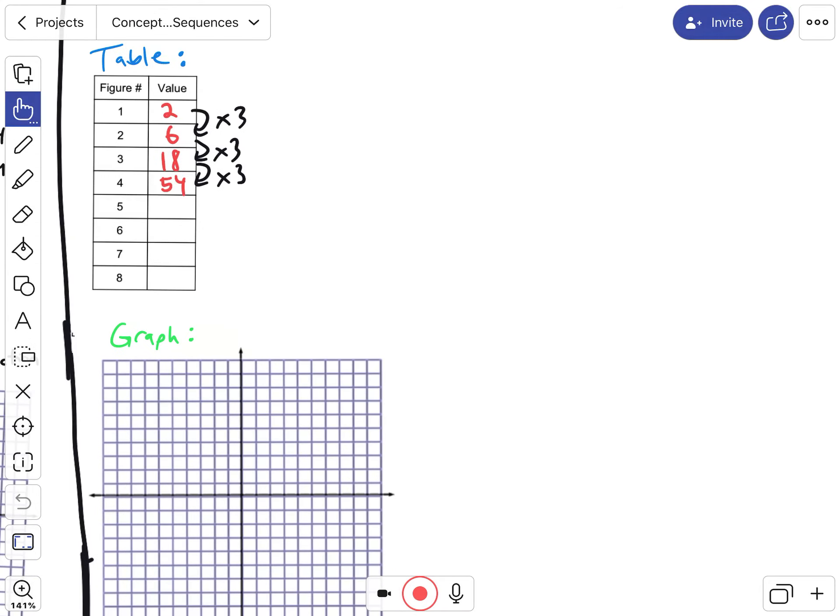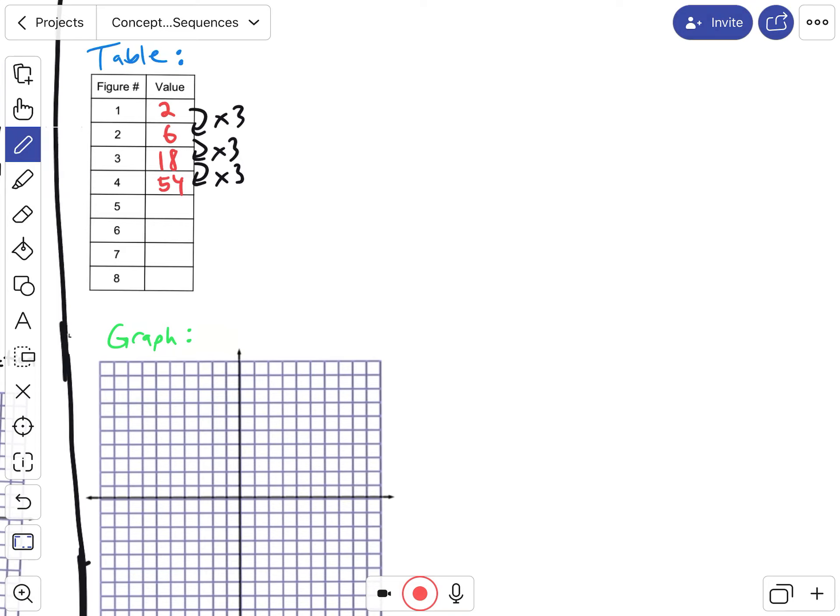And so what would we get if we put this on a graph? Well, we have to fit 54, which is quite a lot. Let's just go by 2s. So 2, 4, 6, 8, 10, 12, 14, 16, 18. All right. Let's graph 3 points. So this is 1, 2 is here. 2, 6 is going to be 2, 4, 6 right here. And then 3, 18 is going to be right here. So notice we just run out of space.